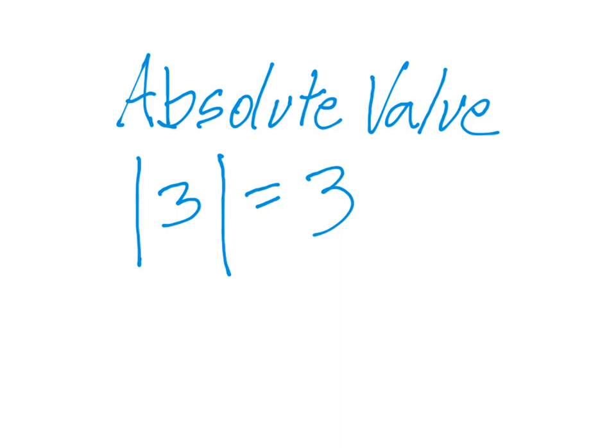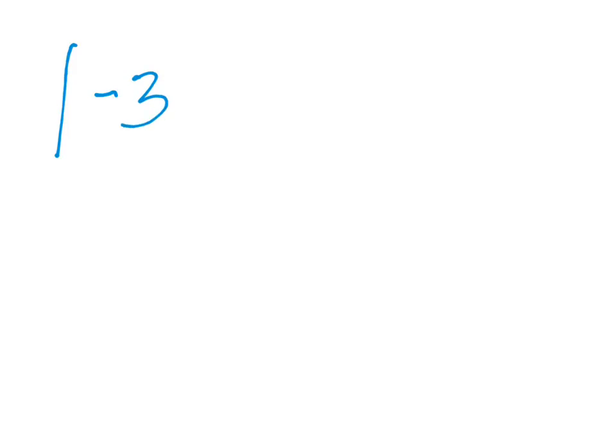We can also take the absolute value of negative numbers. How far is negative 3 from zero? It is also 3 units from zero. So the absolute value of negative 3 is 3.